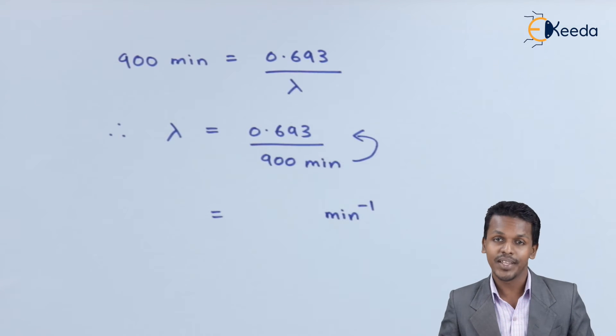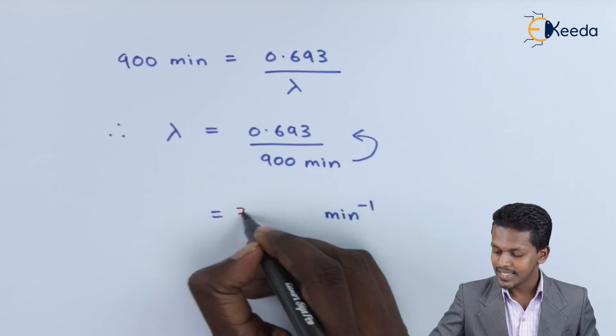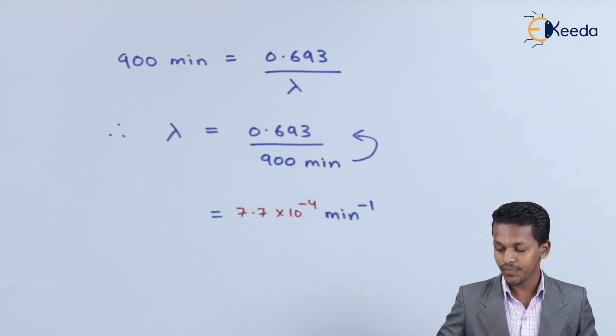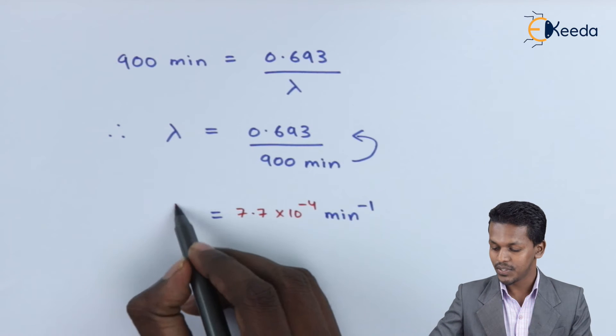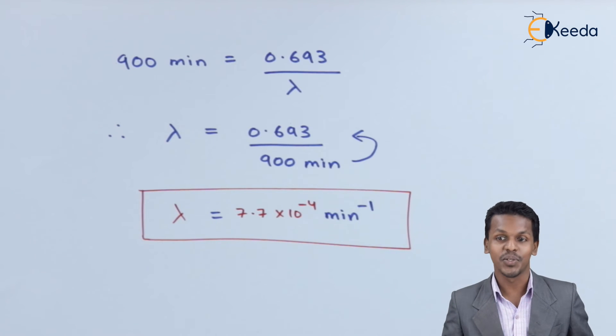Let's see what answer we get. After calculation, we have the value as 7.7 × 10⁻⁴ min⁻¹. Therefore, this is the value of the decay constant for this numerical.